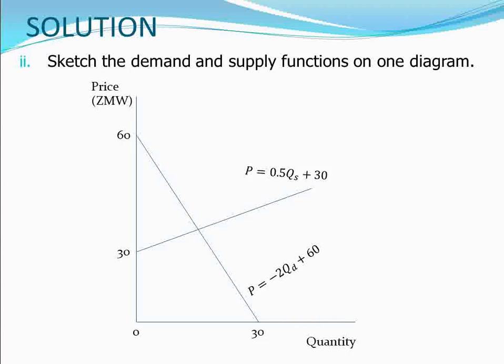On the final diagram, the equilibrium point is where the demand and supply curves intersect, at the equilibrium price of 36 Kwacha and equilibrium quantity of 12 units. This concludes the discussion on part one and part two of demand and supply.